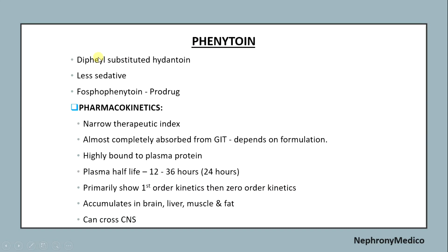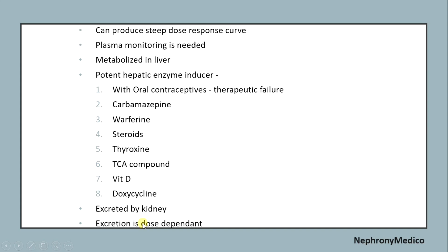Phenytoin is a diphenyl-substituted hydantoin. It is the least sedative and the prodrug is fosphenytoin. Pharmacokinetics: it has a narrow therapeutic index, is almost completely absorbed from the GIT, and is highly bound to plasma protein. Plasma half-life is around 36 hours. It initially follows first-order kinetics then zero-order kinetics. It accumulates in the brain, liver, muscle, and fat, and can cross the central nervous system. It produces a steep blood response curve, so plasma monitoring is needed, and it is metabolized in the liver.